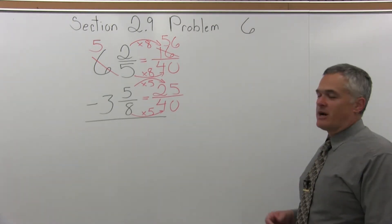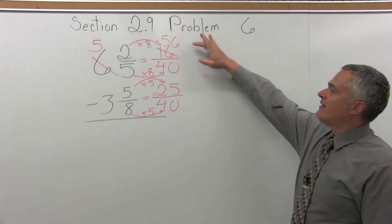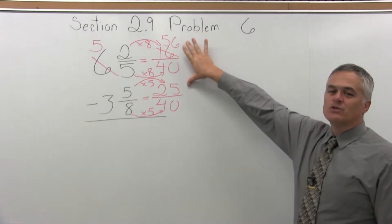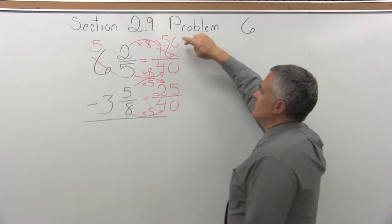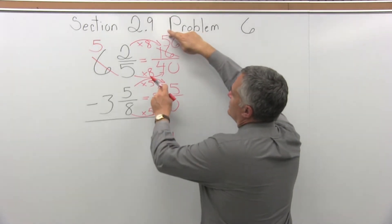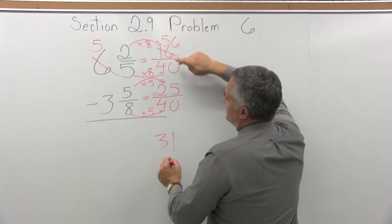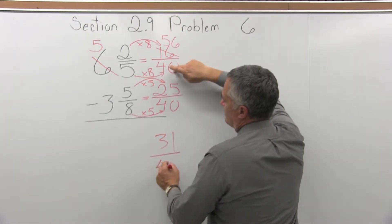That's how you borrow when you subtract mixed numbers. Now I have to subtract 56 minus 25. Now that 56 is big enough. 6 minus 5 is 1, 5 minus 2 is 3, I have 31 as the numerator, common denominator is 40.